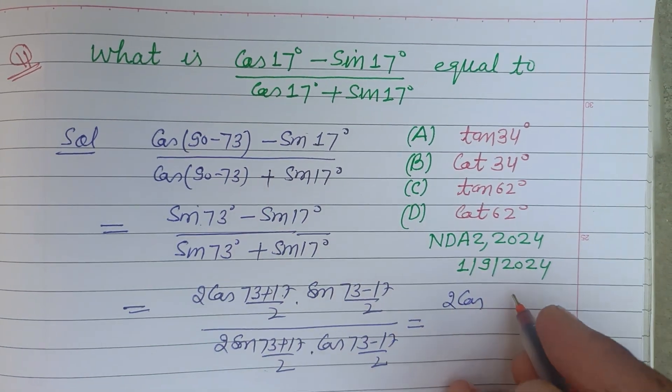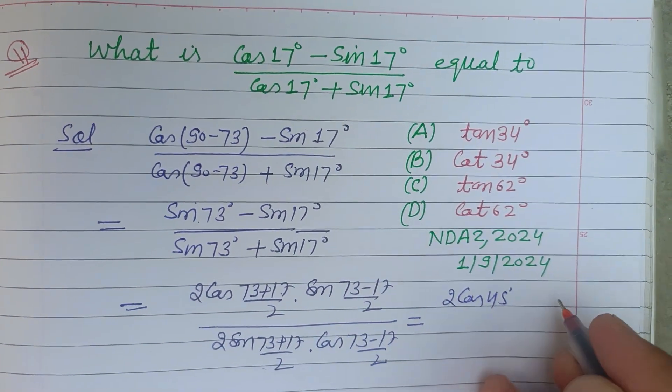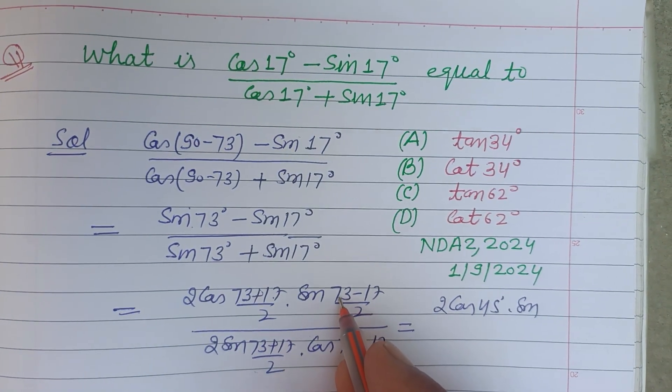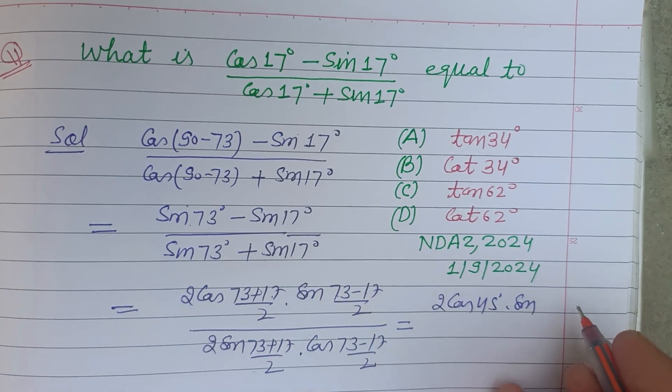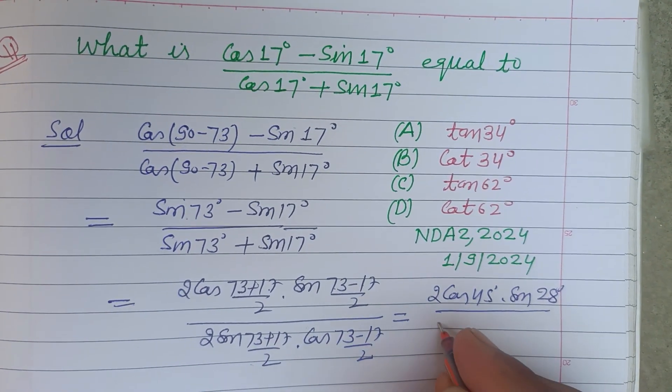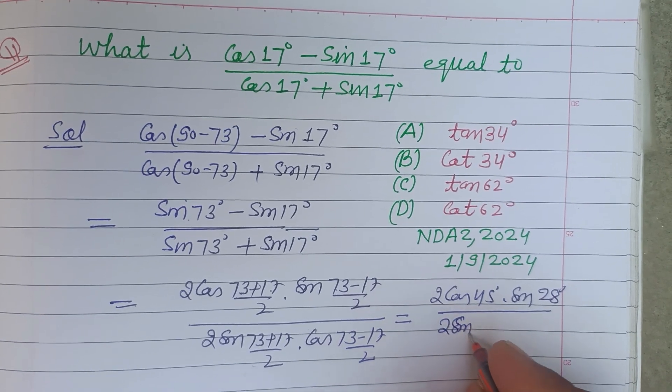which is 90/2, 45°, into sin(73 - 17)/2 which is 56, so this is 28 upon 2 sin 45° into cos 28°.